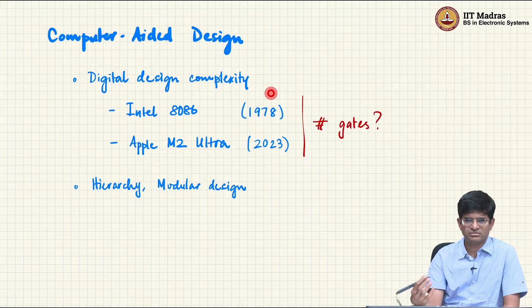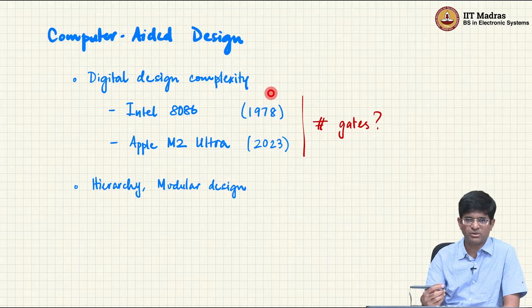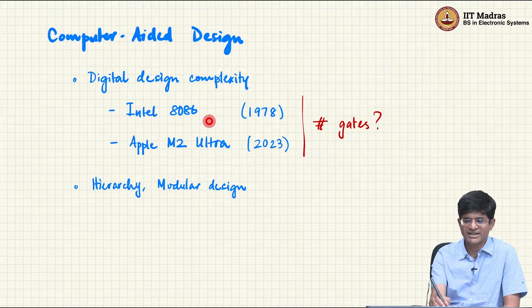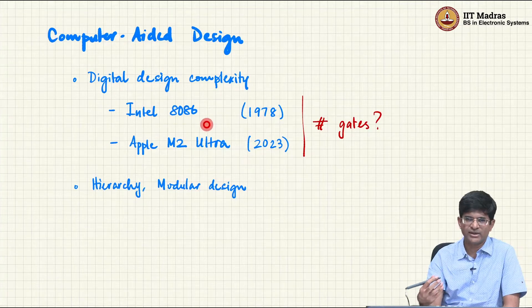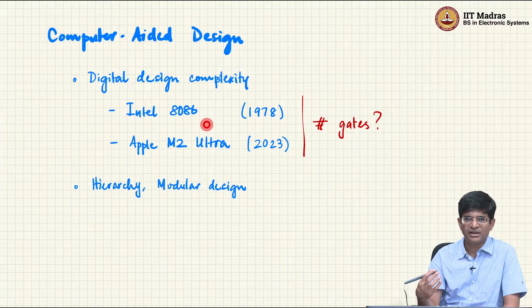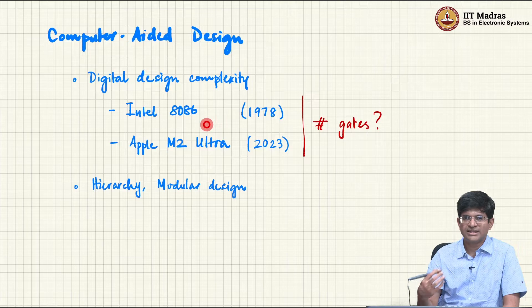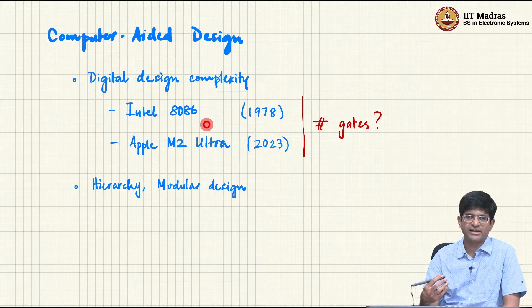The first well-known processor used on a reasonably large scale is probably the Intel 8086 — the 8080 and 8088 came before it, but the 8086 is a very well-known popular one. It sort of set the standard for the so-called x86 architecture of processors.